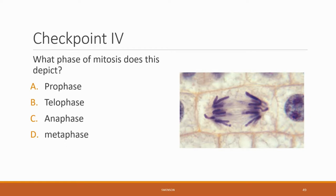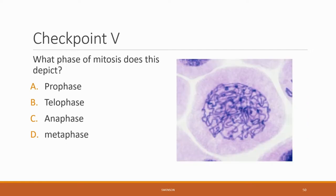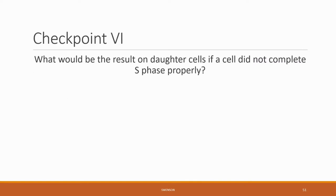Here we are with checkpoint four: what phase of mitosis does this depict? Checkpoint five: what phase of mitosis does this depict? Checkpoint six: what would be the result for daughter cells if a cell did not complete S phase properly?